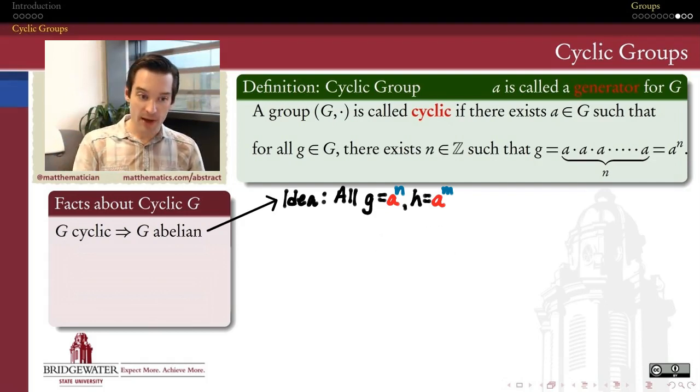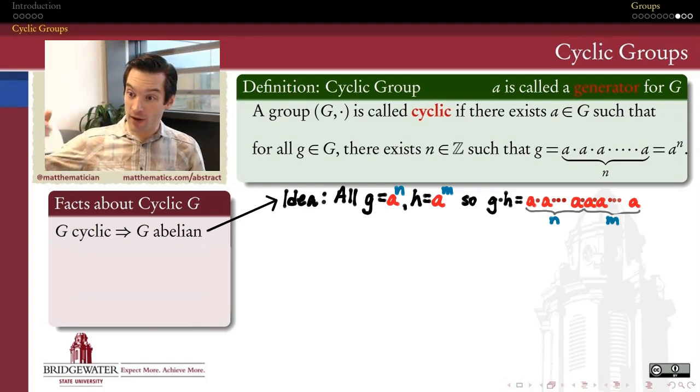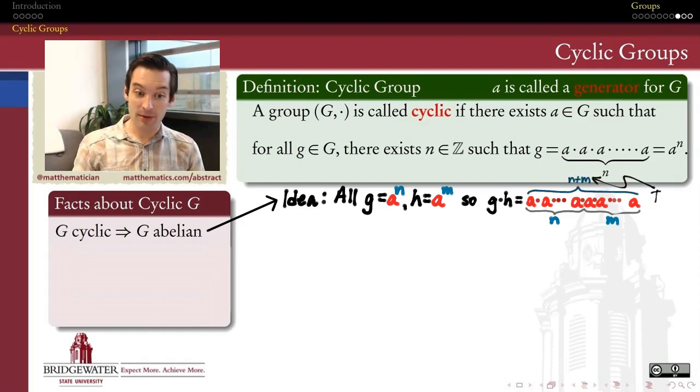So what happens when I operate G, operate H, multiply them together? All I'm doing is multiplying together a string of A's with another string of the same A's. If I have N of them first, and then another set of M of them afterwards, how many do I have in total? I have N plus M.